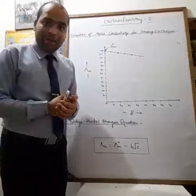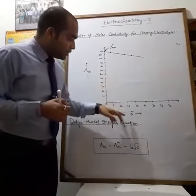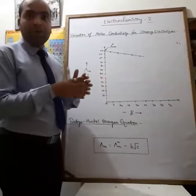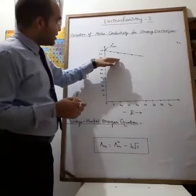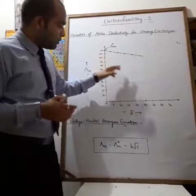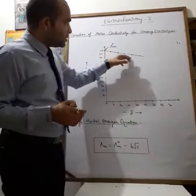unit volume starts decreasing. That's why the molar conductivity for strong electrolytes starts decreasing with concentration. Now, at √C equal to zero, we will draw a curve between